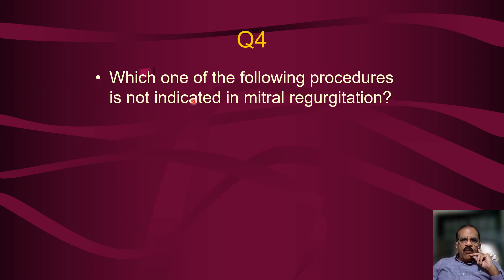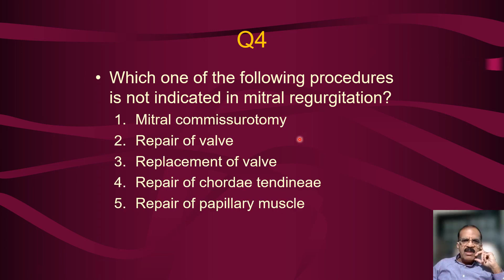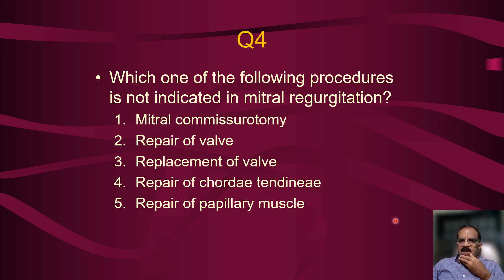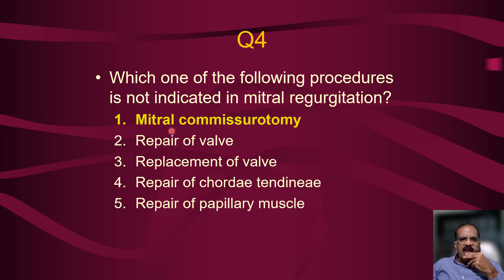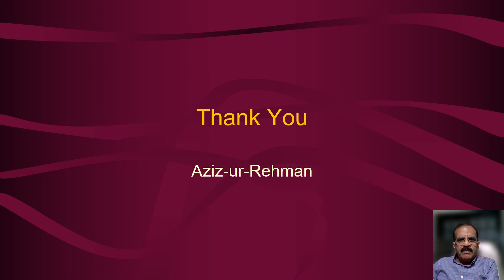Question four: which one of the following procedures is NOT indicated in mitral regurgitation? Options: mitral commissurotomy, repair of valve, replacement of valve, repair of chordae tendineae, repair of papillary muscle. The correct answer is mitral commissurotomy — because commissurotomy is done when the valve is stenosed and you open it up (with balloon or surgery). In mitral regurgitation the valve is not stenosed; it is incompetent. So repair or replacement of the valve, or repair of the chordae or papillary muscles, would be the appropriate procedures.